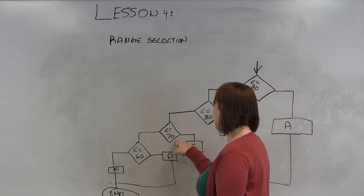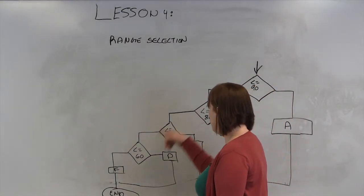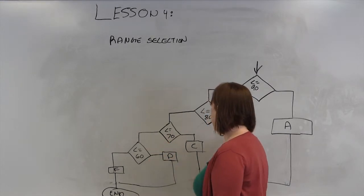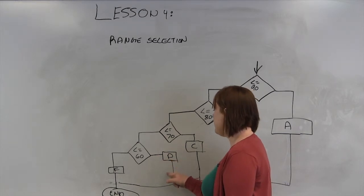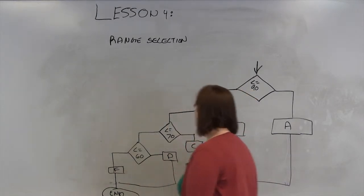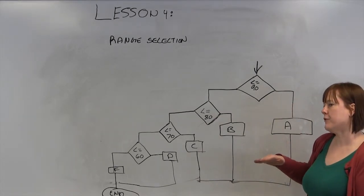Then it drops down. Greater than or equal to 70 equals a C. Drops down again because you've already eliminated the higher options. Greater than or equal to 60 is a D. Anything else is an F. And that's how you filter if you have a lot of stacked options for ranges.